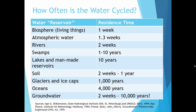Here we're looking at how often the water gets cycled, or basically how long. When we talk about residence time, that's how long the water is staying in a reservoir. It goes from the shortest to the longest period of time. You don't need to memorize the amount of time water spends in each one, but I want you to have an idea of where water stays the longest and where it stays for the shortest amount of time.